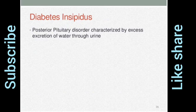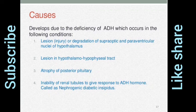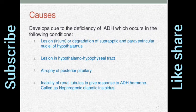Diabetes Insipidus: a posterior pituitary disorder characterized by excessive excretion of water through urine. Causes develop due to deficiency of ADH, which occurs in the following conditions: lesions, injury, or degeneration of the supraoptic and paraventricular nuclei of the hypothalamus; lesions in the hypothalamohypophyseal tract; atrophy of the posterior pituitary; and inability of the renal tubules to respond to ADH hormone, called nephrogenic diabetes insipidus.